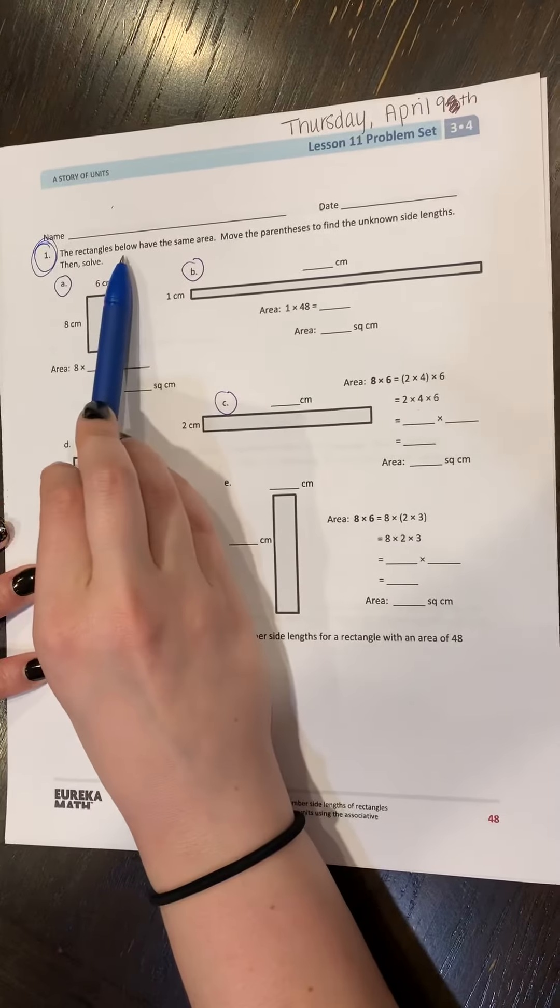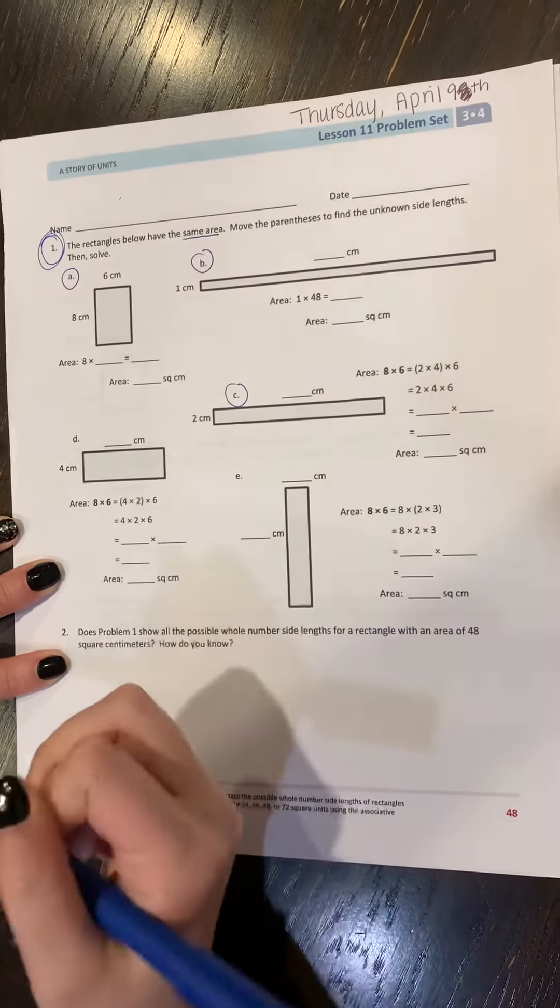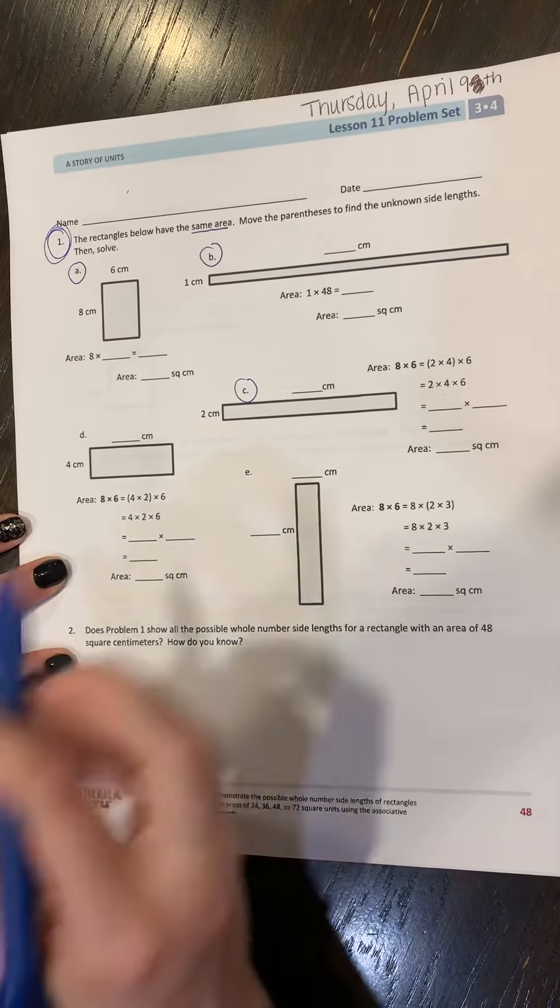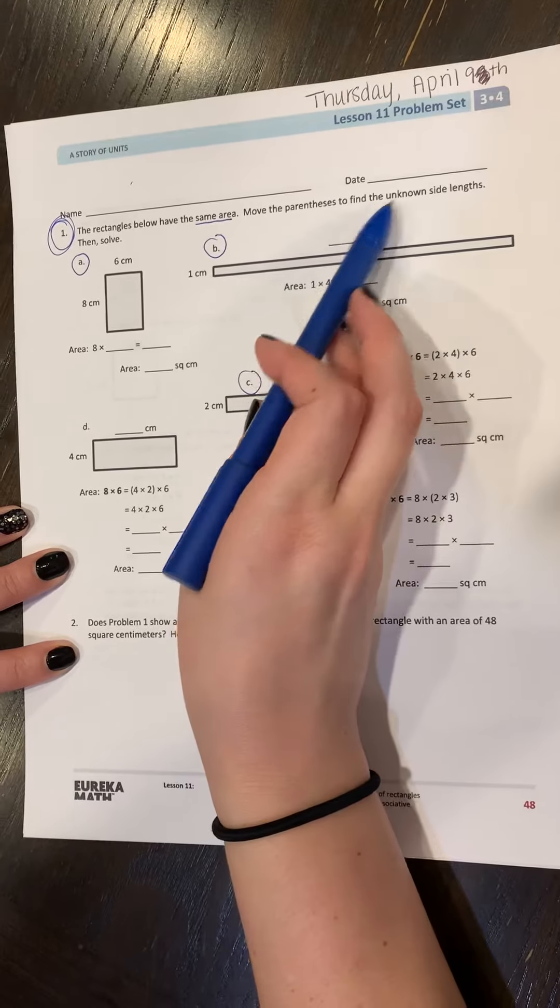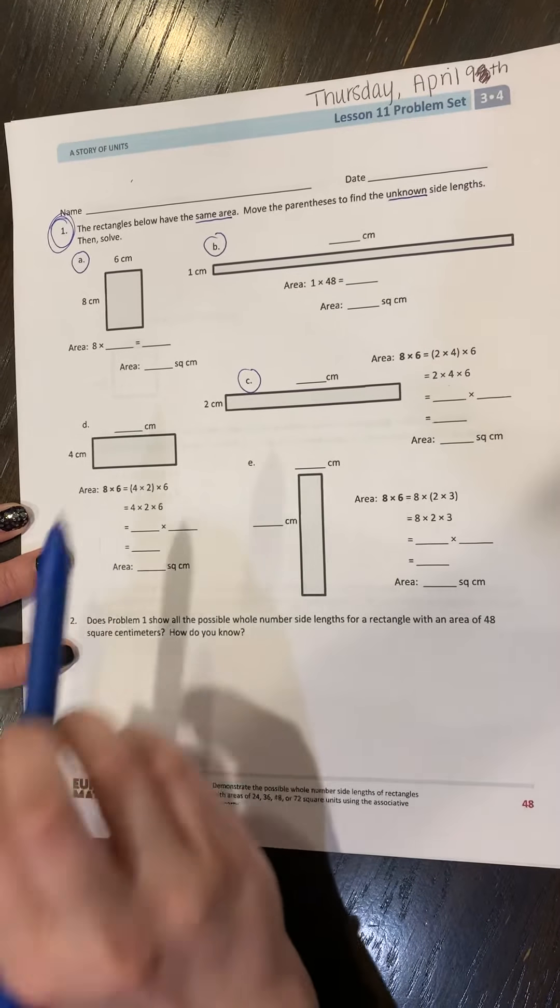The rectangles below have the same area. So you already know the area. What you are doing is moving the parentheses to find the unknown side lengths. Then you're going to solve for them.